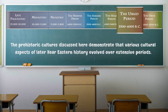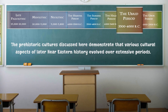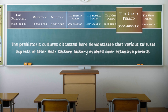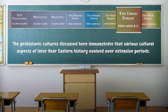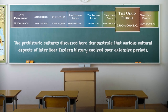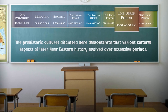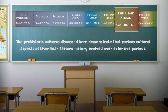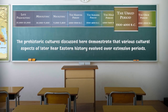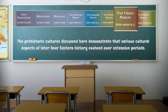The Ubaid culture paved the way for the development of full-fledged civilization in southern Mesopotamia over the next thousand years. The prehistoric cultures discussed here demonstrate that various cultural aspects of later Near Eastern history evolved over extensive periods. The culmination of these processes occurred in the 4th millennium BC when several innovations led to the establishment of Sumerian civilization.